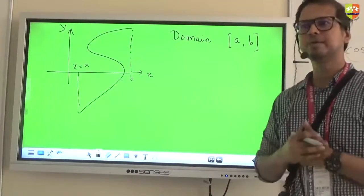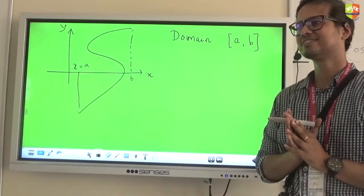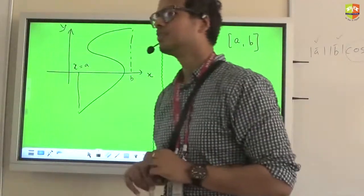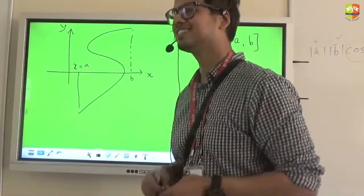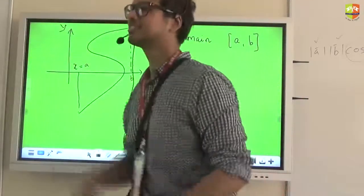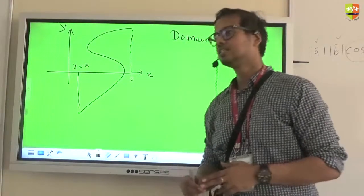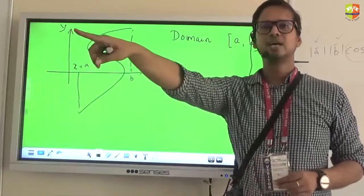So many things we have to learn because they have not been introduced to these small things in our class 10. Let's say a and b is your domain, so every element is getting mapped. Now the one we need to know is if we draw a vertical line to a particular x value. Why vertical line? Why not horizontal line?